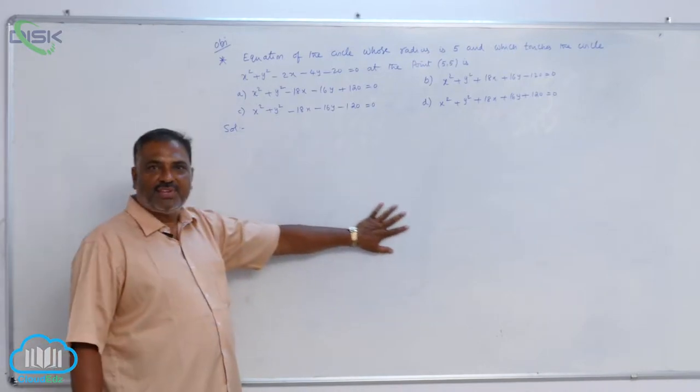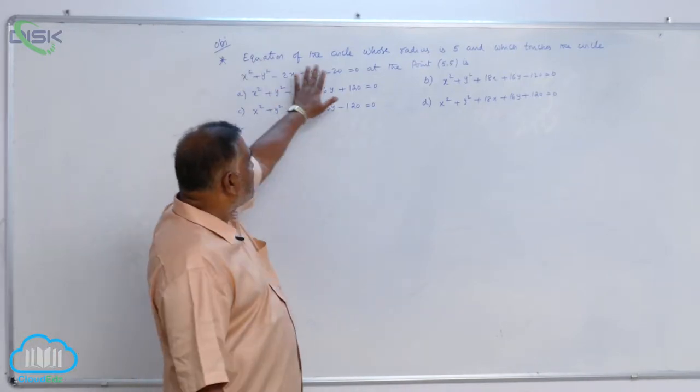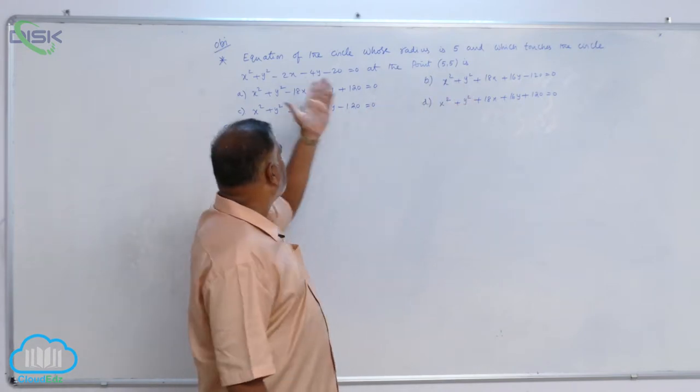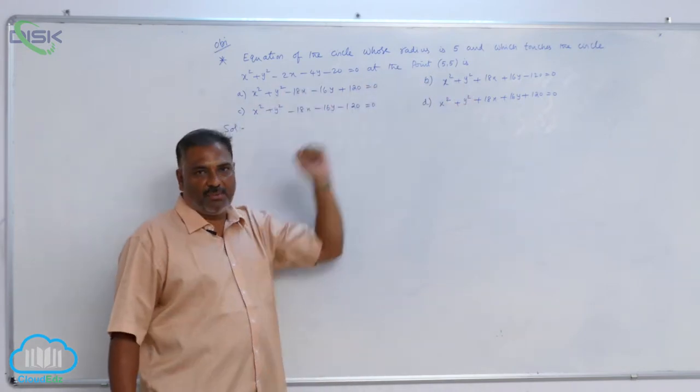Let us discuss a problem related to circles. Find the equation of a circle whose radius is 5 units and which touches a given circle at the point (5, 5).